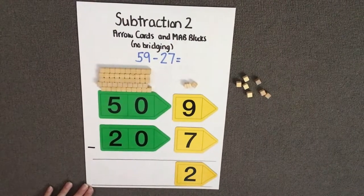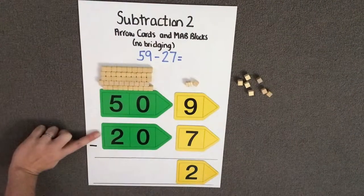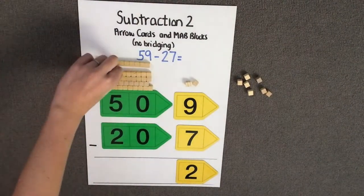Now I can subtract my tens. I'm going to do 5 tens or 50 take away 2 tens. We need to remove 2 lots of tens.